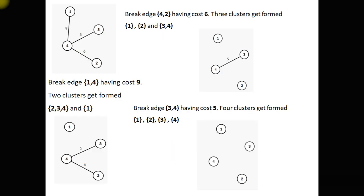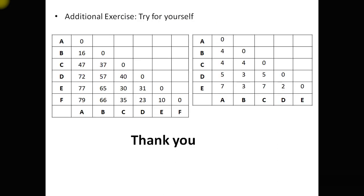The divisive approach with the minimum spanning tree is very simple to understand and to solve problems. Additional exercises are given — try for yourself. These are problems in which one has 6 vertices and the second has 5 vertices, with their adjacency matrix representation given. Try for yourself for extra practice. Thank you very much.